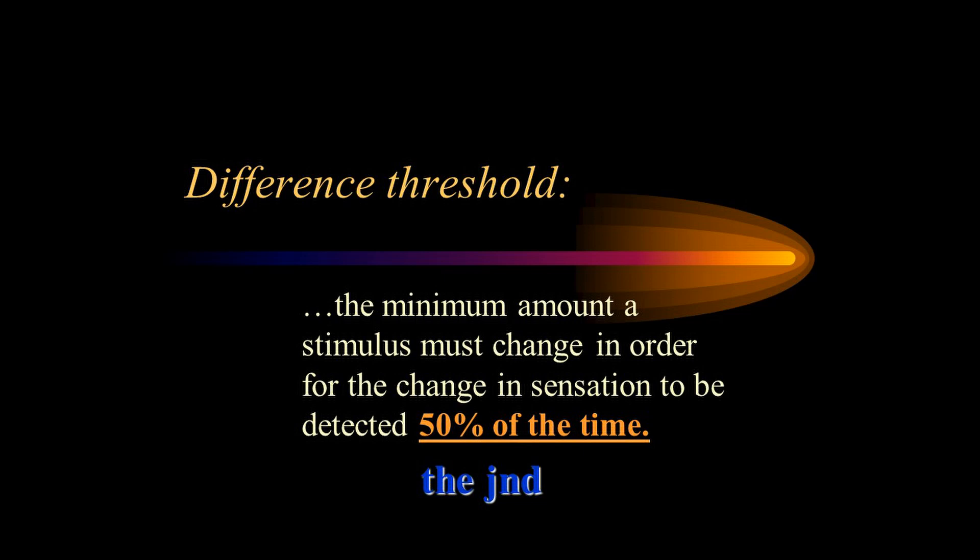Again, there's a 50 percent criterion. This was arbitrarily selected to determine the value of the difference threshold. That 50 percent criterion in the definition is important for both the difference threshold and the absolute threshold.